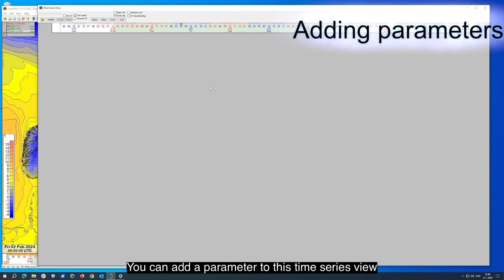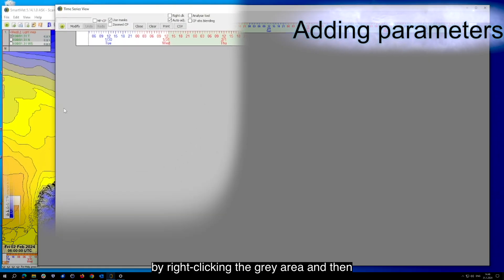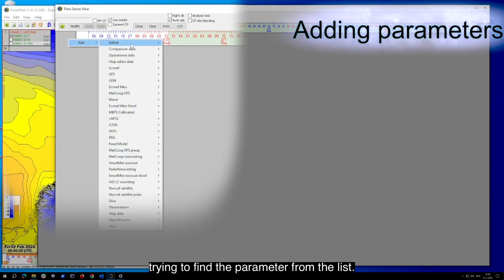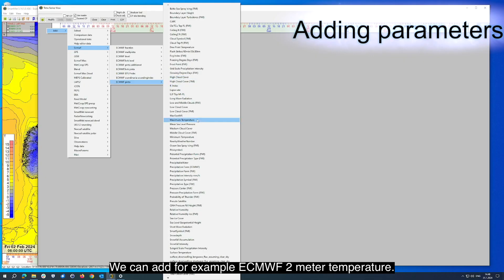You can add a parameter to this time series view by right-clicking the gray area and then trying to find the parameter from the list. We can add, for example, ECMWF 2 meter temperature.